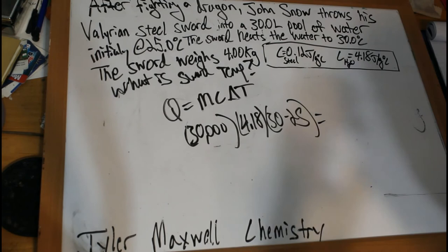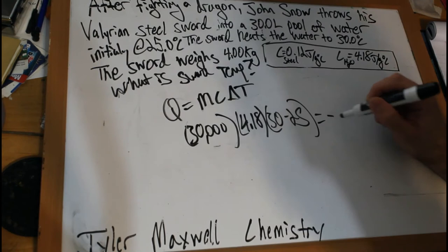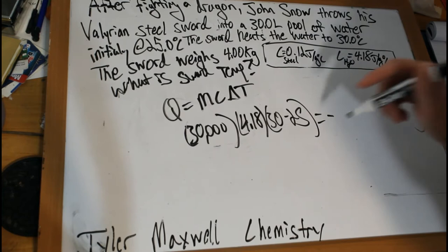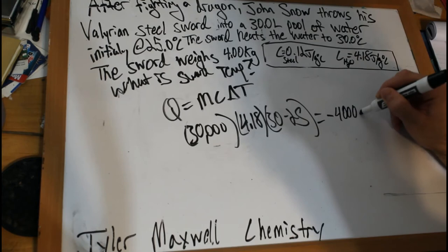The amount of energy that the sword lost. So this amount of energy is the amount of energy that the water gained when the sword was thrown into it. So this is going to be equal to the amount of energy that the sword lost, so that's where we put a negative there. We're using the same equation, Q equals mc delta t, but for the sword now. The mass of the sword is four kilograms, so it's 4,000 grams.